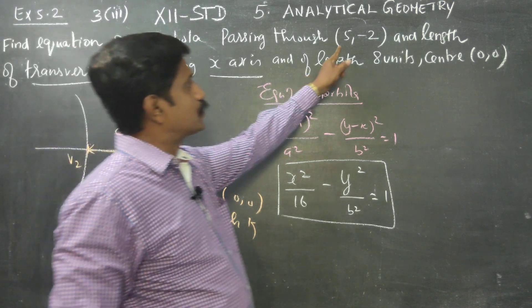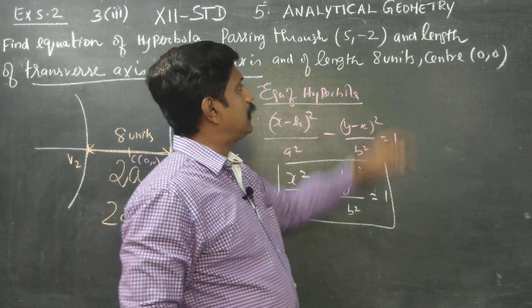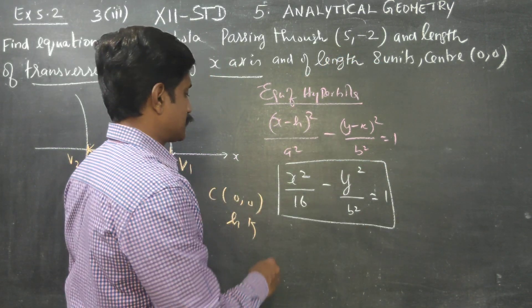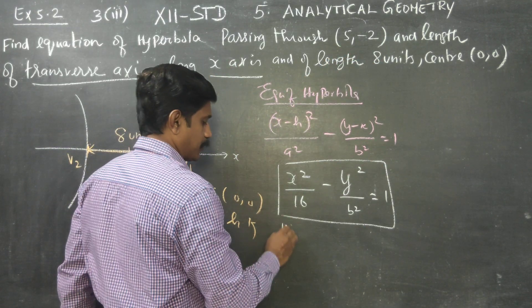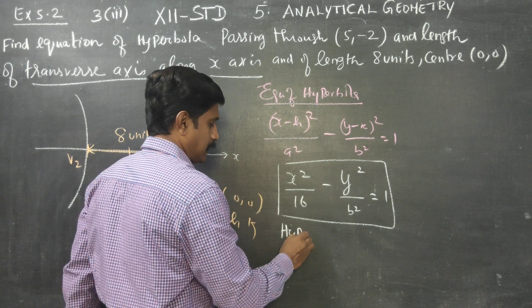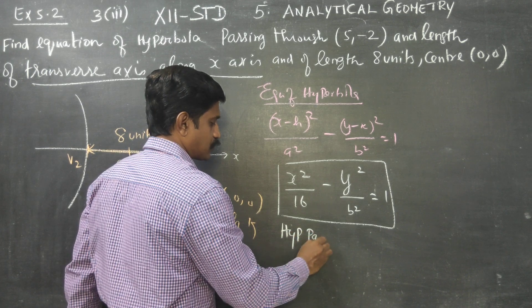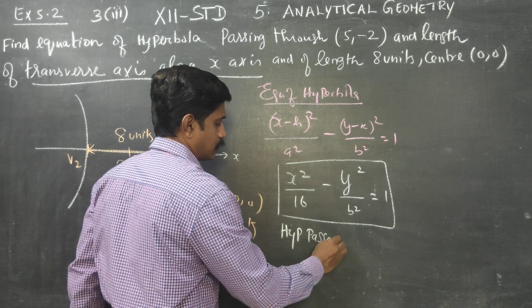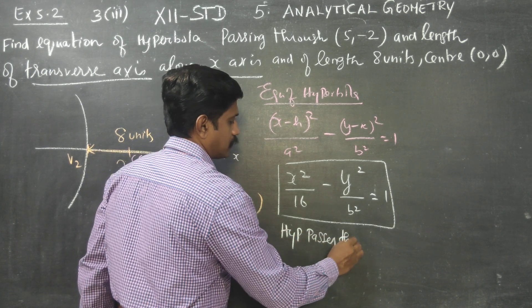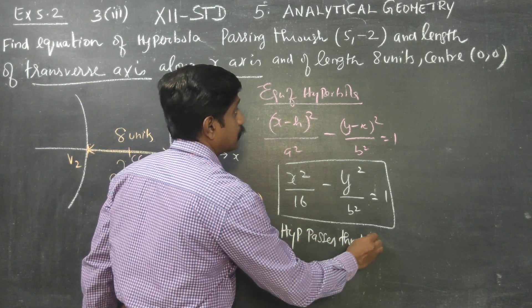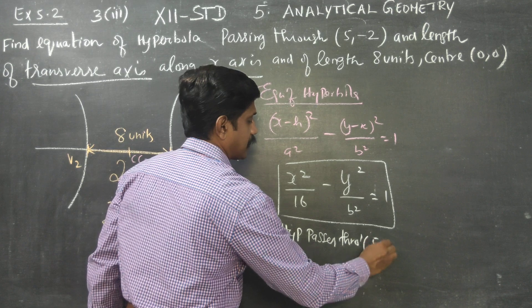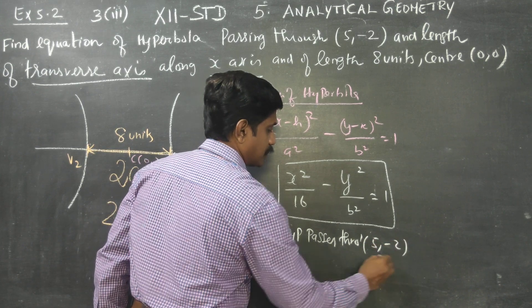What is b²? The hyperbola passes through (5, -2), so we substitute x = 5 and y = -2 into the equation.